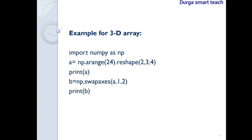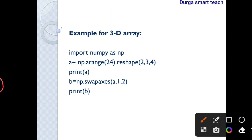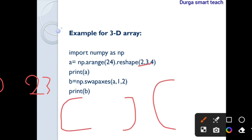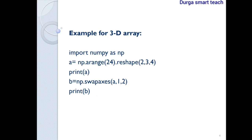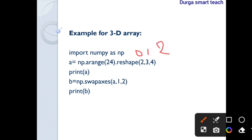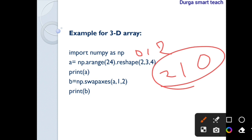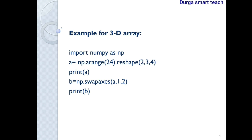Now let's look at the three-dimensional array example. I take 24 elements from 0 to 23, reshaped to 2 planes, 3 rows, and 4 columns. With transpose, the shape would be reversed to 4 planes, 3 rows, and 2 columns — i.e., shape (2,3,4) becomes (4,3,2). However, this full reversal does not happen with swap axis.